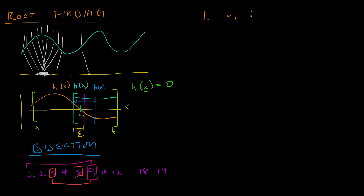Now let's look at the steps to actually perform this algorithm. Step one: determine a₁, b₁, and epsilon to start with. Step two: calculate the midpoint, which is just the mean of a and b from the previous iteration.